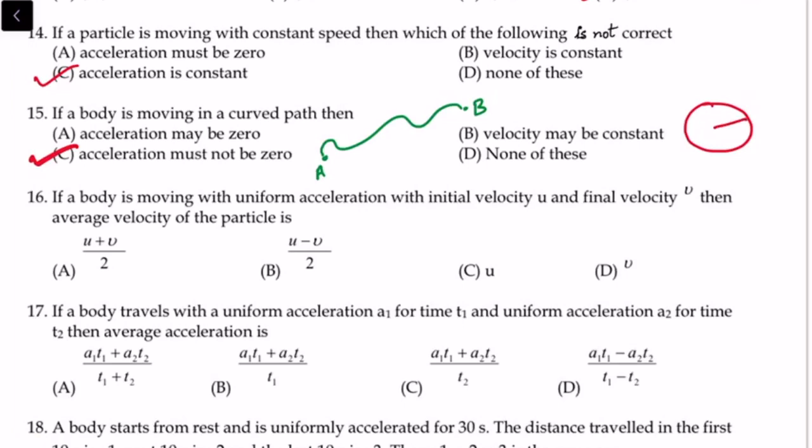Next question: A body is moving with uniform acceleration with initial velocity u and final velocity v. We need the average velocity of the particle. With uniform acceleration, average velocity equals (u + v) / 2. This is a very direct result — wherever uniform acceleration exists, add initial and final velocity then divide by 2.